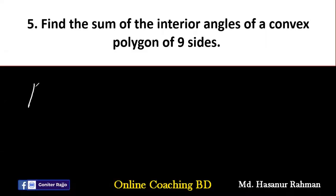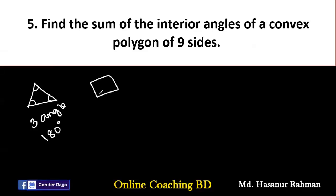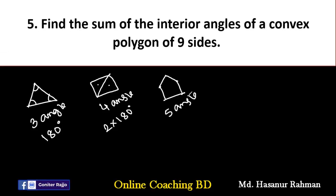If I draw a 3-sided polygon — that is a triangle — it has 3 sides and 3 angles, and the sum of those 3 angles is 180°. For 4 sides (a quadrilateral), it can be divided into 2 triangles, so the sum is 2 × 180°. For a pentagon (5 sides), it creates 3 triangles, so the sum is 3 × 180°. Since every triangle represents 180°, three triangles represent 3 × 180°.